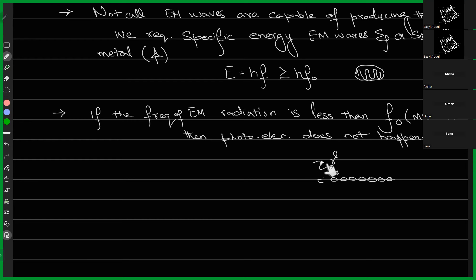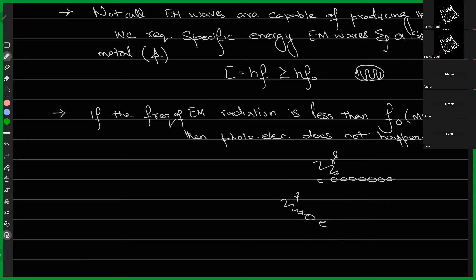What happens is: this photon, when it strikes the metallic surface, is really striking an electron. That specific electron gains that energy from the photon, because the photon is absorbed by the electron. So if I draw this system — here we have a photon that strikes this electron — the electron absorbs all this energy and goes to a higher state. Since it is already at the surface, it is removed from the surface of the metal and ejected.